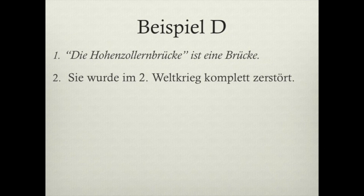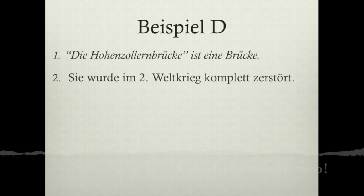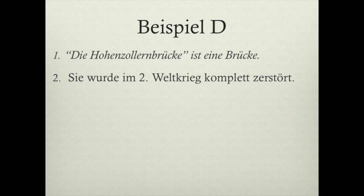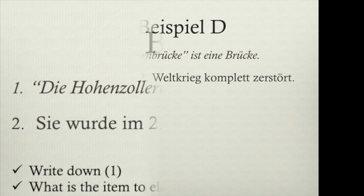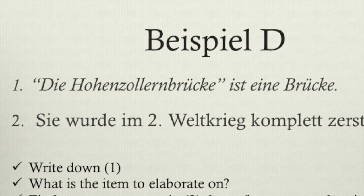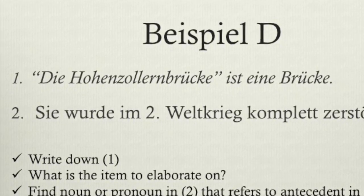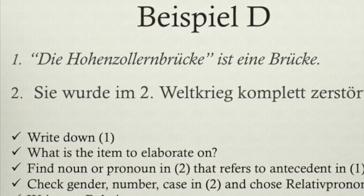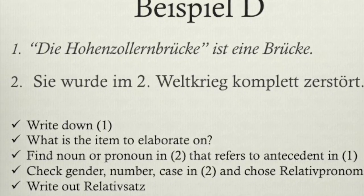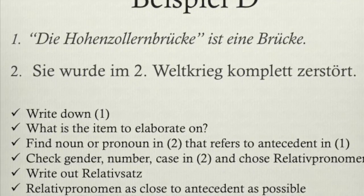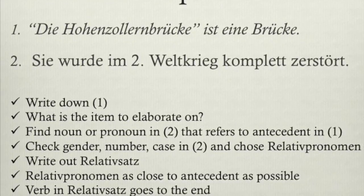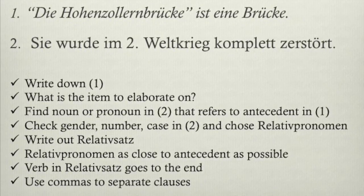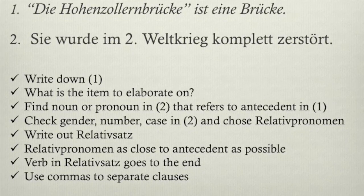Now try to combine these two sentences: 'Die Hohenzollernbrücke ist eine Brücke.' 'Sie wurde im Zweiten Weltkrieg komplett zerstört.' If you can do this on your own, pause here. If not, use this checklist: write down sentence one; identify what item you need to elaborate on; find the antecedent in sentence one; check gender, number, and case and choose the correct Relativpronomen; write out your Relativsatz; make sure the Relativpronomen is close to the antecedent; kick the verb to the end; and add commas to separate the elements.